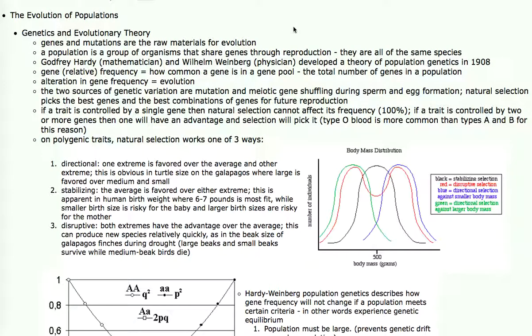Not long after the turn of the 20th century, when Gregor Mendel's theory of genetics became widely known and accepted, two scientists, Godfrey Hardy, a mathematician, and Wilhelm Weinberg, a physician, fused genetics theory with evolution and developed a theory of population genetics around 1908.